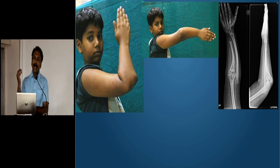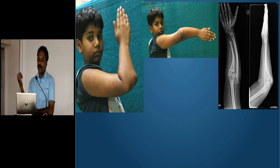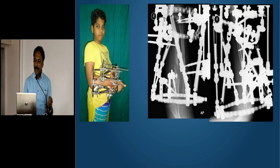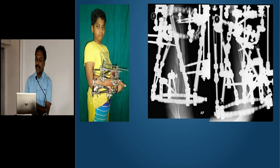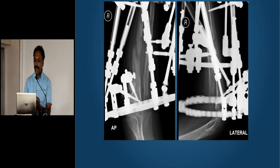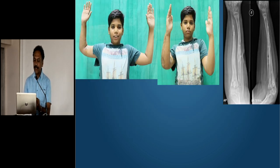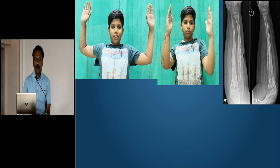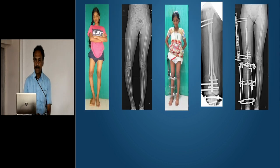For an ulnar club hand with a proximally migrated radius and a bowed ulna, you can perform a percutaneous osteotomy of the radius, lengthen the ulna, and also program the fixator to translate the radial head closer to the ulna after lengthening seven centimeters — to achieve perfect congruence of the proximal radio-ulnar joint.